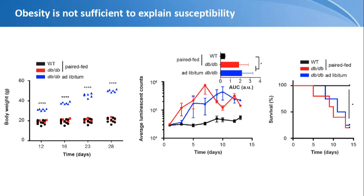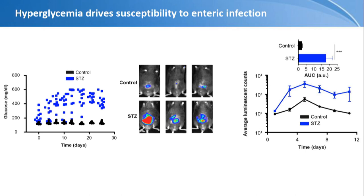What ended up being the case is that it's not obesity per se causing this phenotype, but hyperglycemia. In addition to being morbidly obese, these mice are also hyperglycemic, as expected for type 2 diabetics. So we tested this using a type 1 diabetes model — injecting streptozotocin, which kills insulin-producing pancreatic beta cells. The mice become very hyperglycemic, and interestingly, they also become very susceptible to the same infection. Even though this mouse is not obese and weighs exactly the same as controls, hyperglycemia renders them susceptible to severe infection.